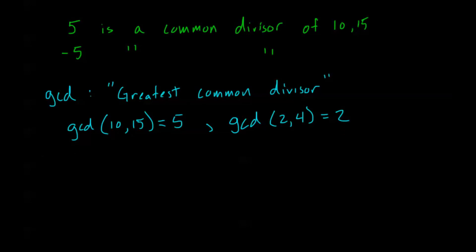Now if, let me change colors here. If the GCD of 2 numbers, of 2 integers A and B is equal to 1, we say that A and B are co-prime. Co-prime. Or sometimes we'll say relatively prime. And all that means is that the only divisor that they have in common is 1, or also negative 1. But the greatest common divisor they have is 1.